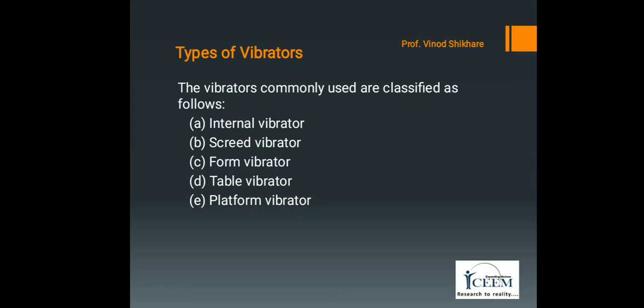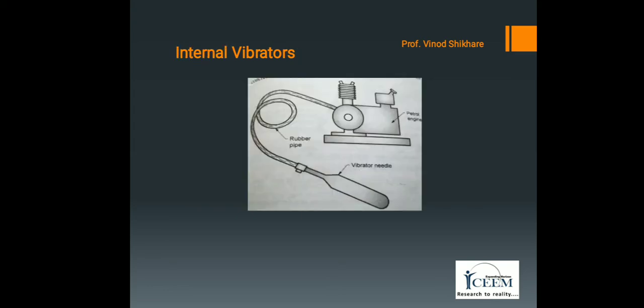The first type is the internal vibrator, also known as needle, immersion, or poker vibrator. It consists of a power unit and a long flexible tube, at the end of which a vibrating head is fitted. These vibrators have higher efficiency since all the energy is directly transmitted to the concrete. As they are portable, they can be readily used in difficult positions. The vibrating element is immersed in the fresh concrete, which transmits vibrations through the vibrator body.